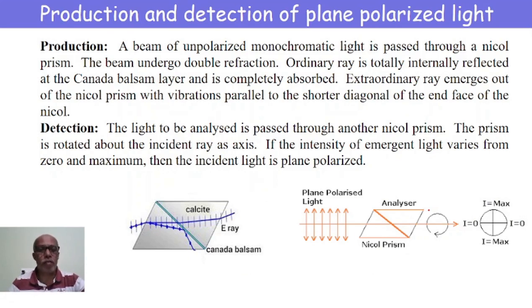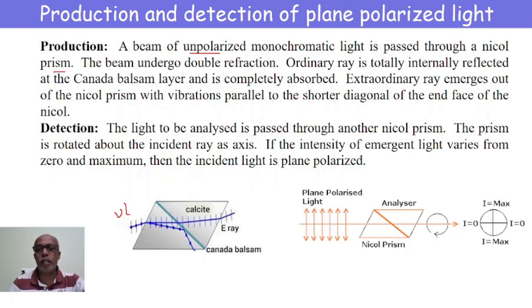In order to produce plane polarized light by making use of a Nicol prism, we consider unpolarized monochromatic light which is made to pass through the Nicol prism. When this unpolarized light passes through the Nicol prism, it undergoes double refraction. The ordinary ray, having vibrations perpendicular to the plane of the paper, undergoes total internal reflection at the Canada balsam interface and is absorbed by the outer blackened surfaces of the cylindrical tube. The extraordinary ray emerges out of the Nicol prism with vibrations parallel to the plane of the board or paper.